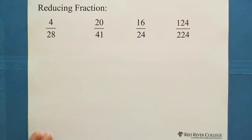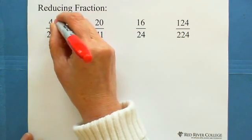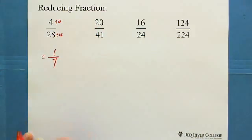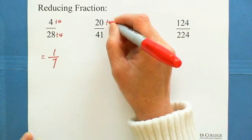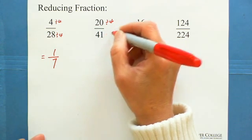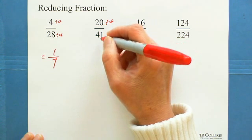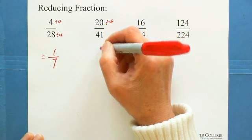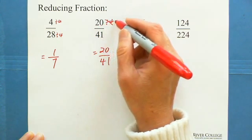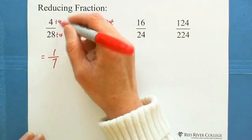Let's do reducing fractions. For 4 over 28: both are divisible by 4, so we divide both by 4 and get 1 over 7. For 20 over 41: 20 is divisible by 4, but 41 is not divisible by 4 — because 40 is divisible by 4 but 41 is not. So 20 over 41 cannot be reduced. The answer remains 20 over 41. You need both numerator and denominator divisible by 4 to reduce.